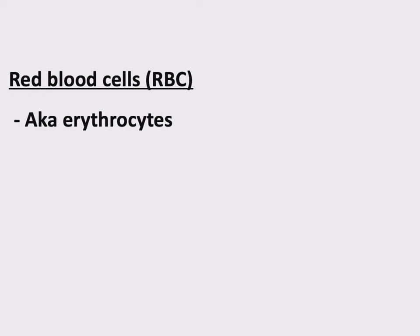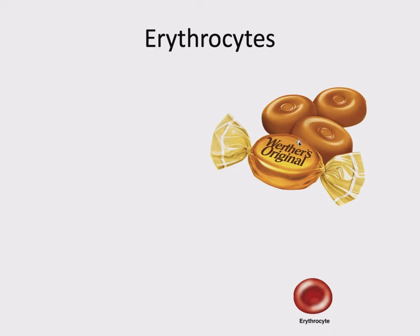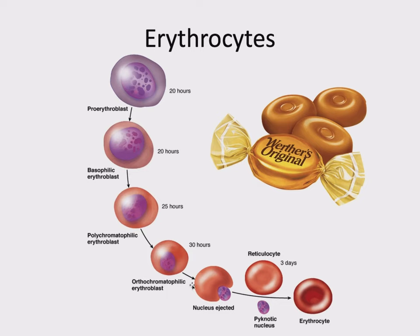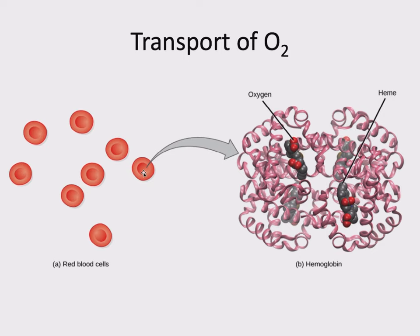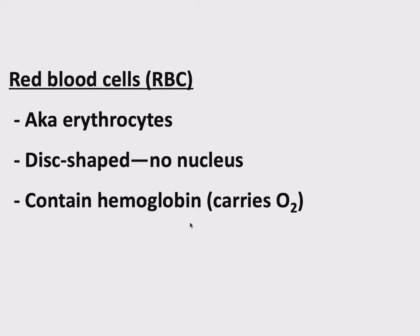Erythrocytes have a kind of a weird shape. The other very strange thing about them is they don't have a nucleus. During their development, early on they have a nucleus, but as they differentiate at a certain stage, they actually eject their nucleus and continue on as a cell without a nucleus. Their job is to carry hemoglobin, which carries oxygen. So erythrocytes are disc-shaped with no nucleus, and they contain hemoglobin which carries O2.